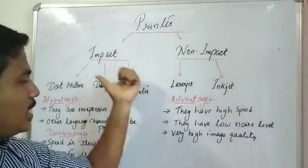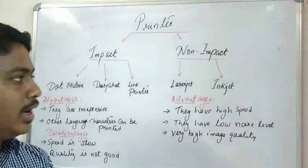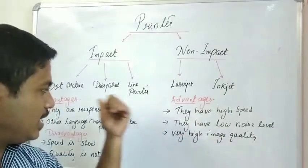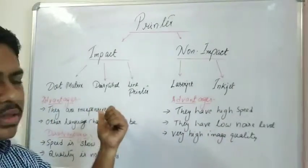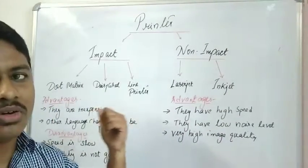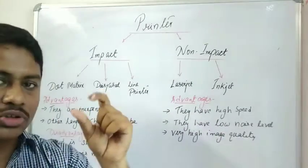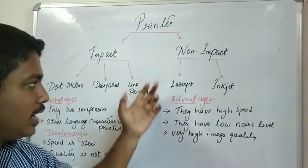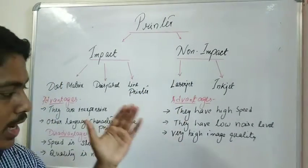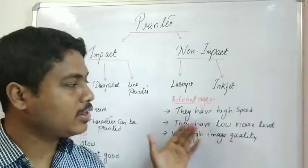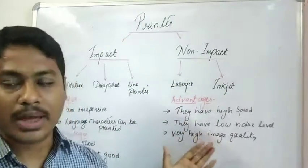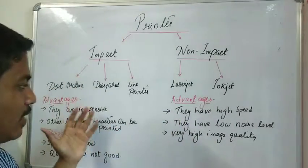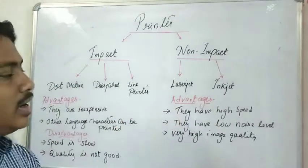Non-impact printers have very high speed compared to impact printers, and they have a very low noise level, whereas impact printers create a very high noise level. The quality of the image printed by non-impact printers is very high. These are some of the advantages and disadvantages of impact and non-impact printers.